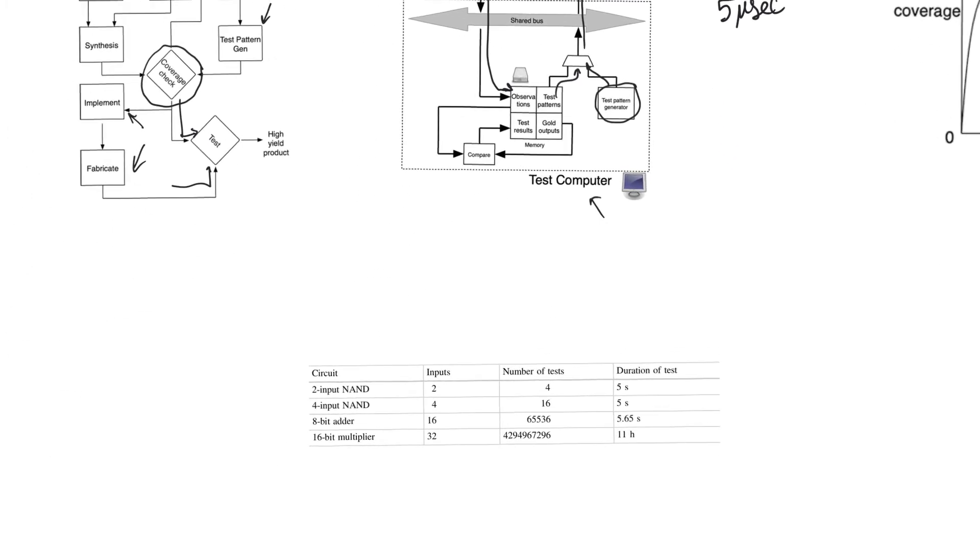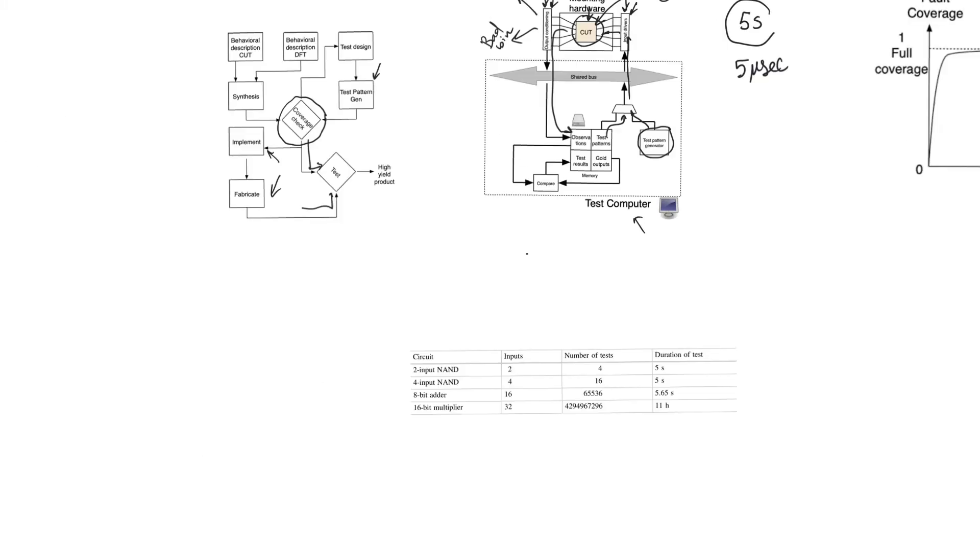So let's calculate the time it takes to test a two input NAND gate. A two input NAND gate is a chip with two inputs and it's a purely combinational chip. So to fully test it, we have to test its truth table. So we have to cover its entire truth table. The truth table has four rows and therefore we have to apply four inputs. Each of this input is called a test. So we have to apply a test by inputting 00, 01, 10, and 11. And then we make observations in the four cases and we compare them to the gold standard, which is the truth table of an NAND gate.